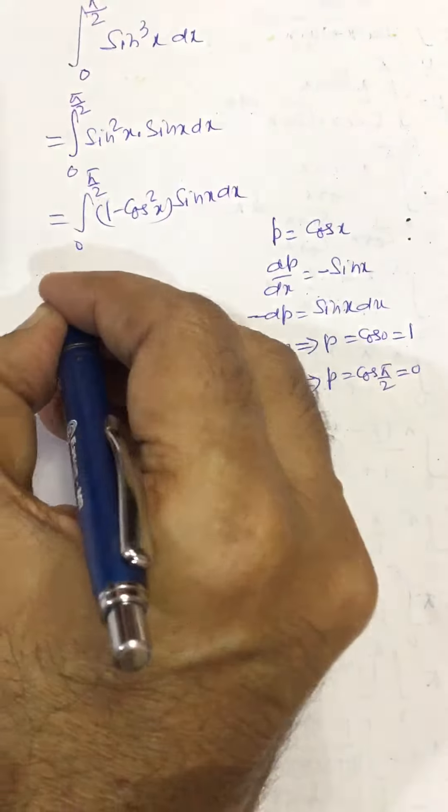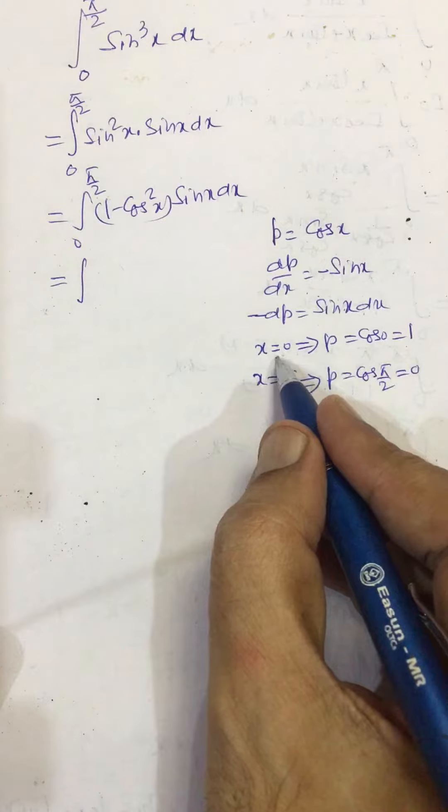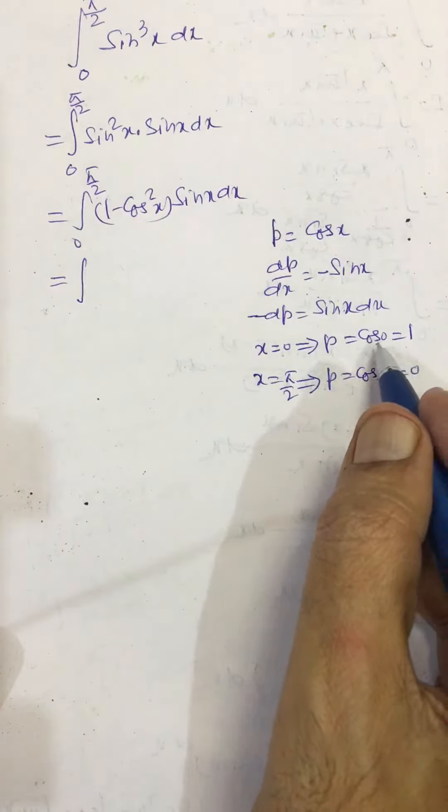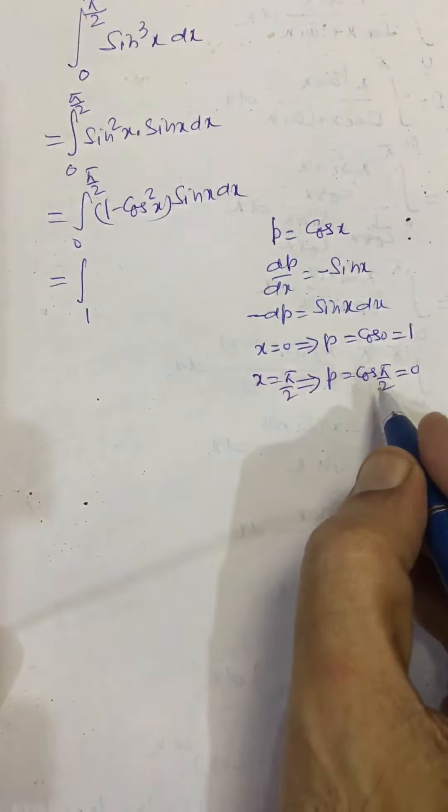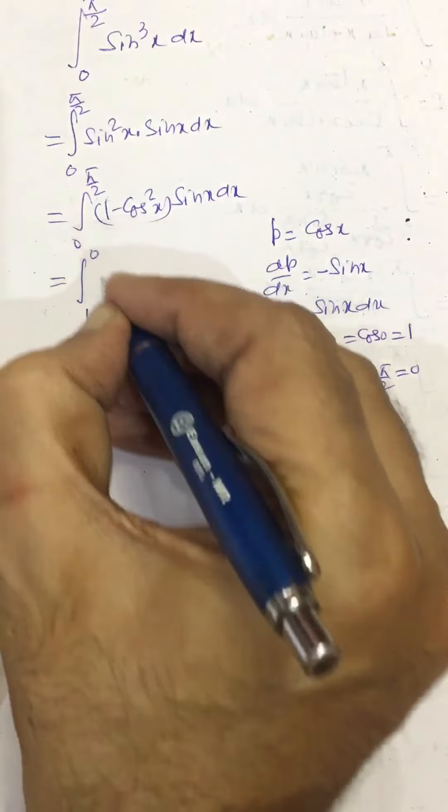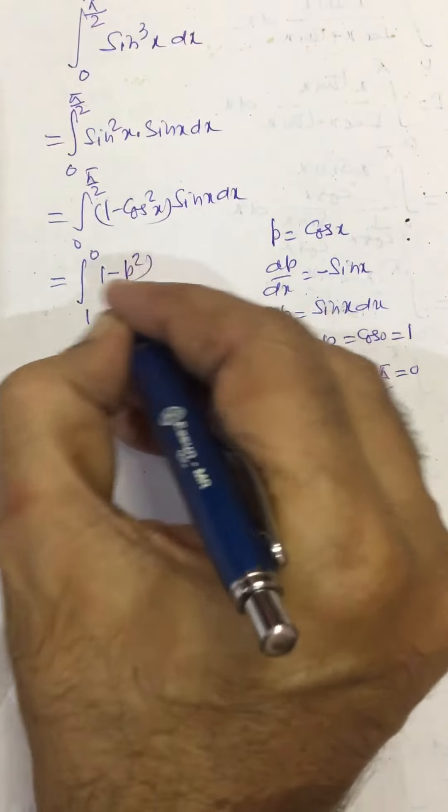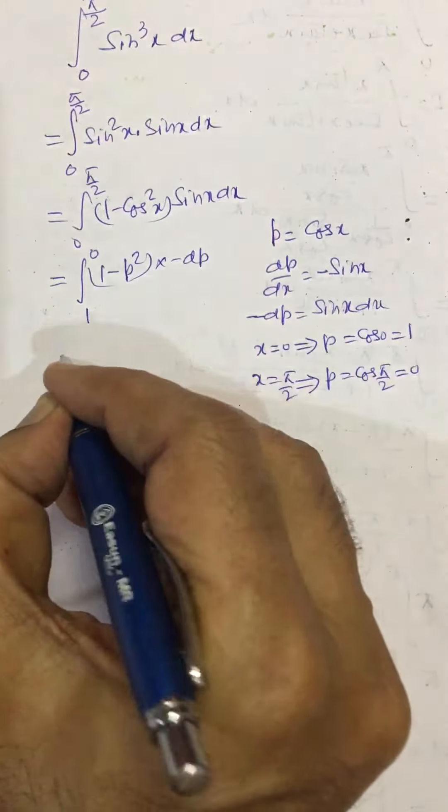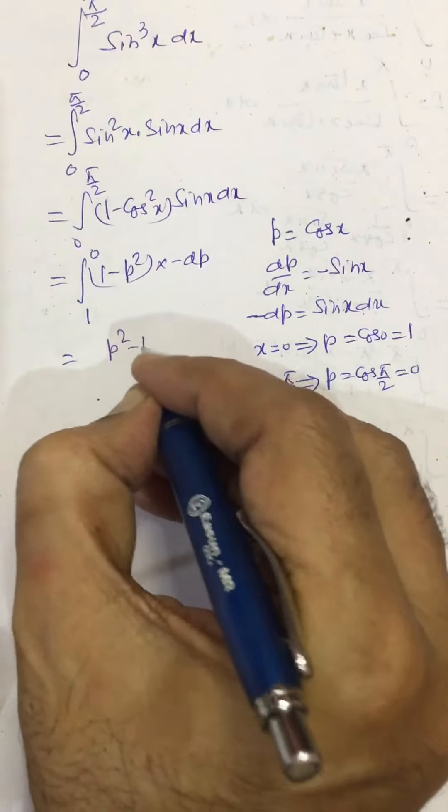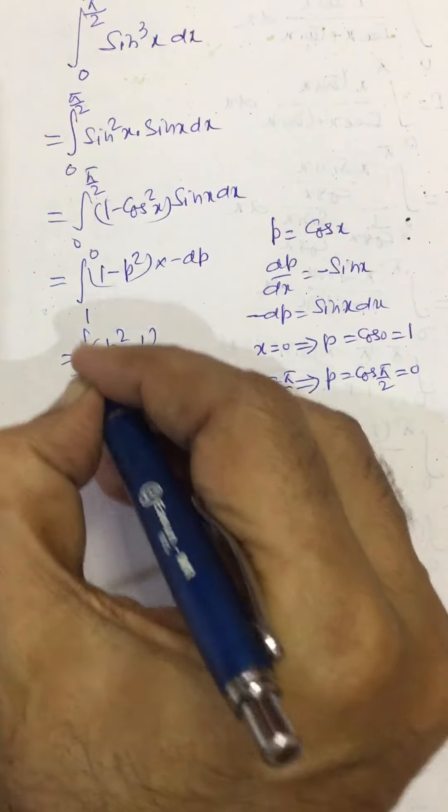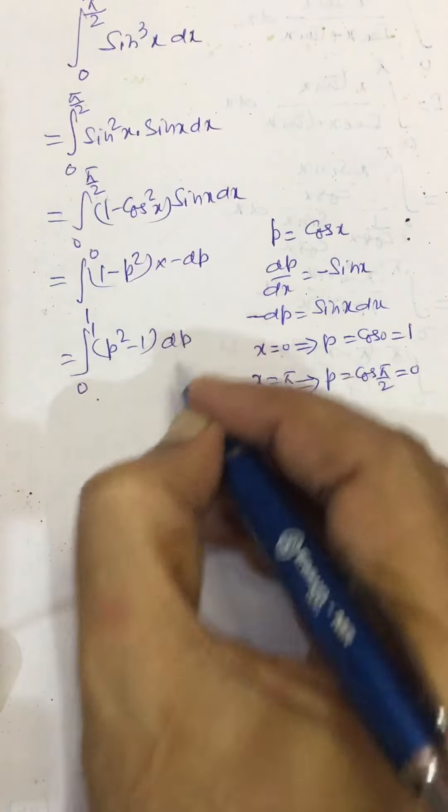So this integral becomes: when x equals 0, p equals 1, and here it is 0. And here it becomes 1 minus p squared times minus dp, which equals integral from 0 to 1 of p squared minus 1 dp.